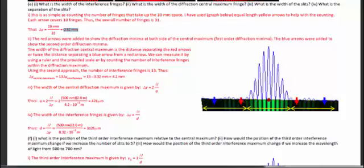Using the 10 millimeter scale to find the distance between the red arrows gives approximately 4.2 millimeters. If asked for the width of other diffraction fringes, those would be half this value — about 2.1 millimeters. This can also be measured as the separation between the blue arrow (first diffraction minimum) and the red arrow (second diffraction minimum), which gives the width of the second diffraction fringe.